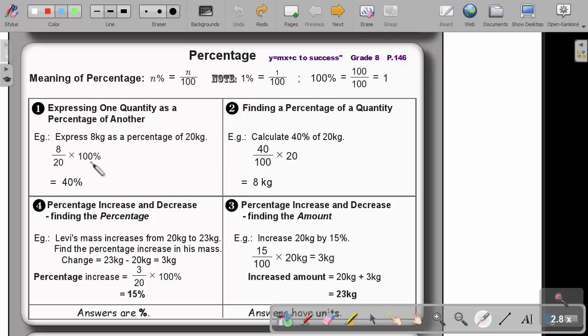So if I ask, if I put this sum into reverse by saying, finding a percentage of a quantity. If I say, calculate 40% of 20 kg. So I want this answer. So basically, what will I do? I will do the reverse. So I don't multiply by 100, but I divide by 100, because that percentage means out of 100. So 40 out of 100, and I multiply with 20. And then I will get that 8 kg. So just remember, finding a percentage of a quantity is the reverse of expressing one quantity as a percentage of another.